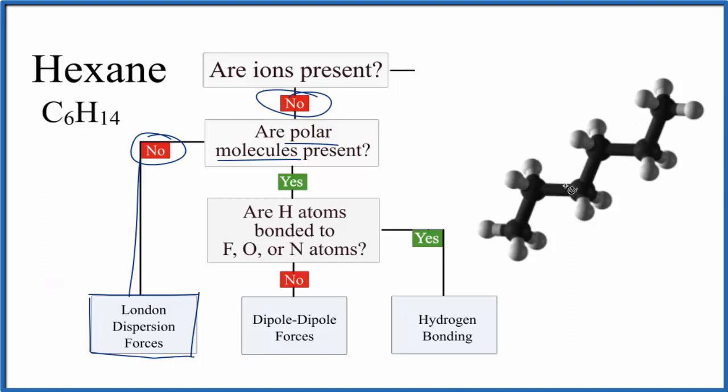So hexane is a liquid at room temperature, whereas something like ethane or methane, where we only have one or two carbons, that would be a gas.